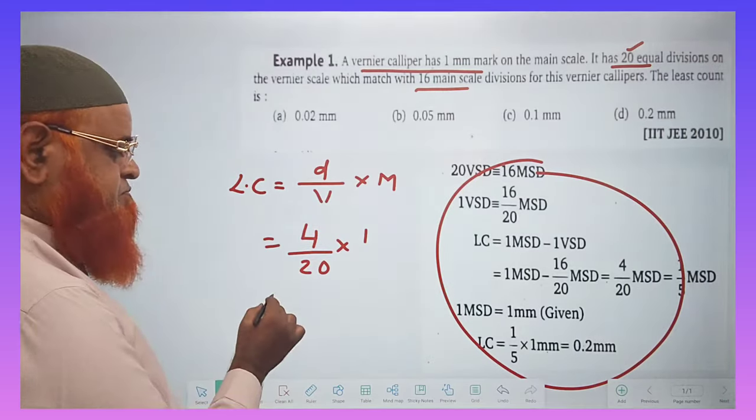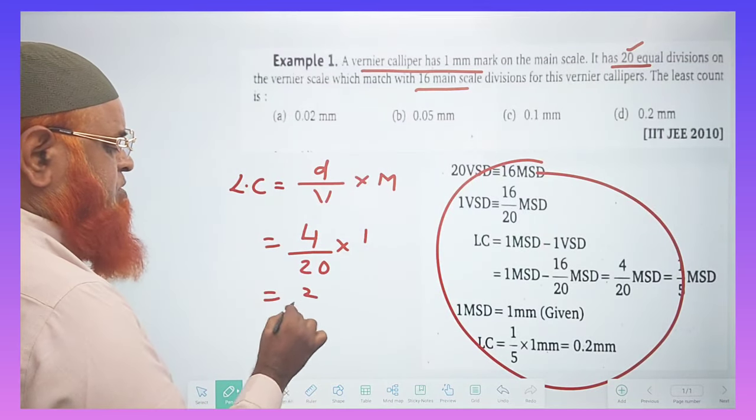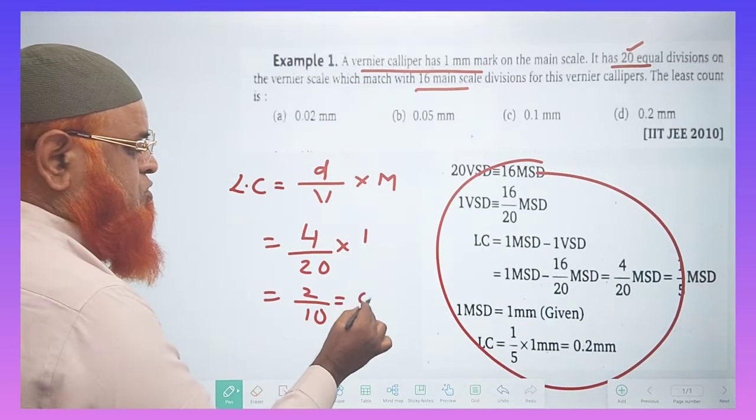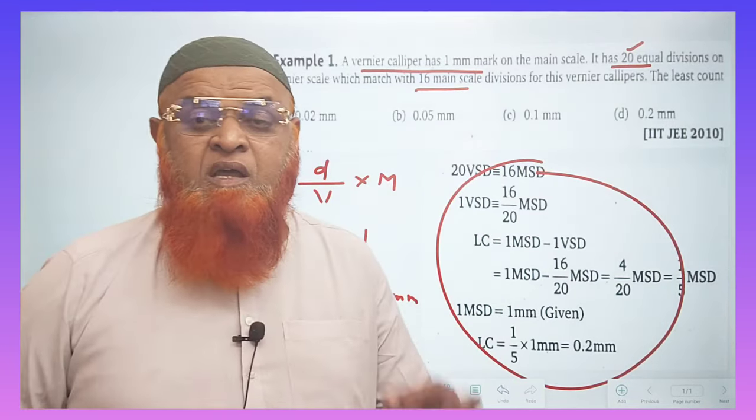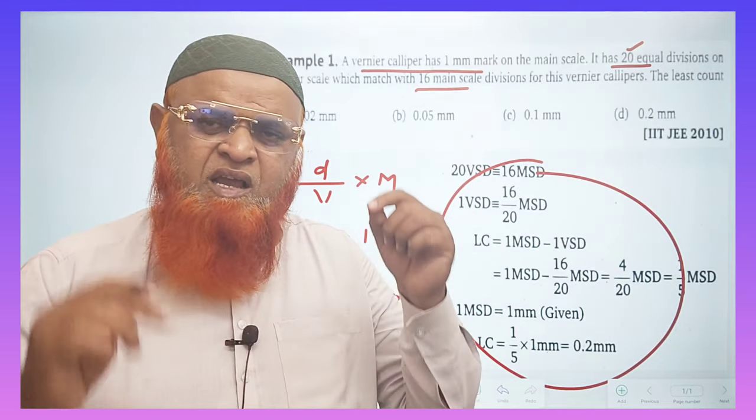20 into how much main scale divisions? Here it is going to be 1 mm. That's it. So if you solve this, one will be getting 4 divided by 20, which is equal to 0.2 mm.